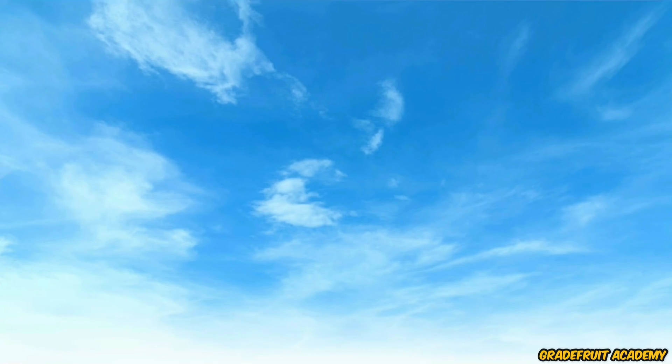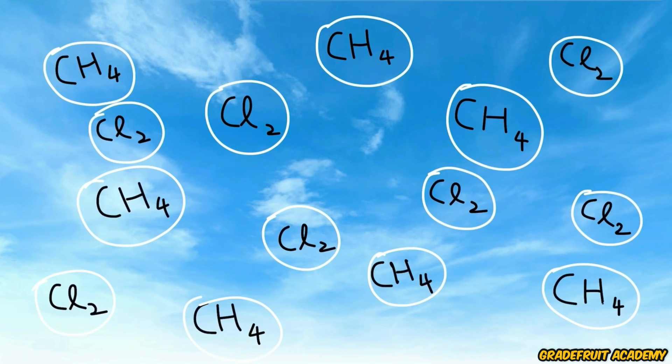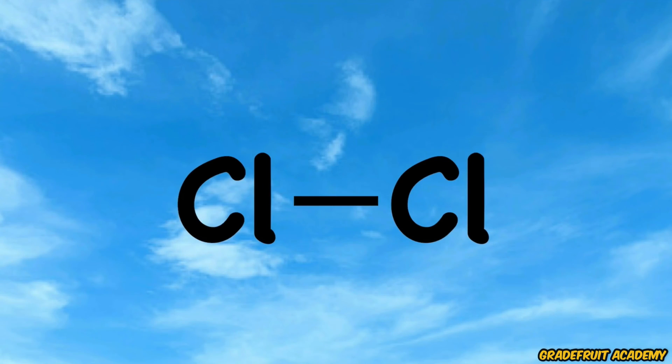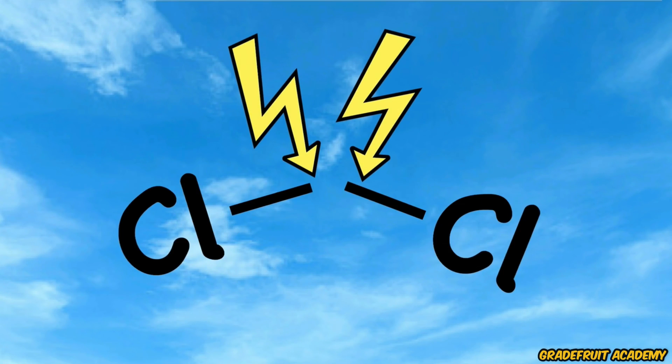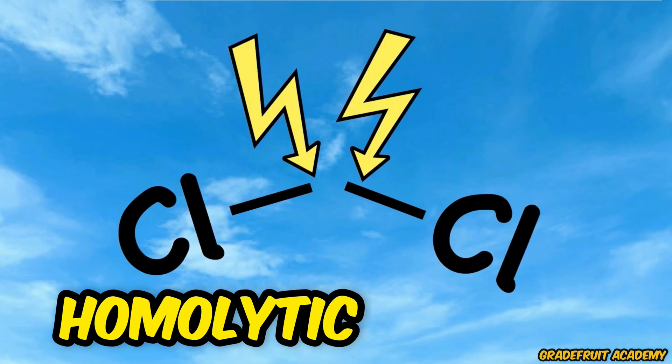Imagine this, there are a lot of methane and chlorine molecules in the air. What will first happen is that the ultraviolet light from the sun will provide the energy to break the bond within the chlorine molecules in a process called homolytic fission.